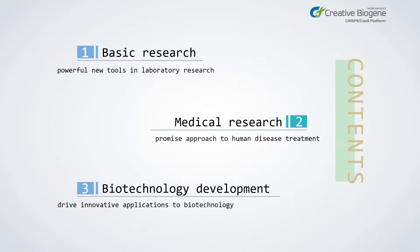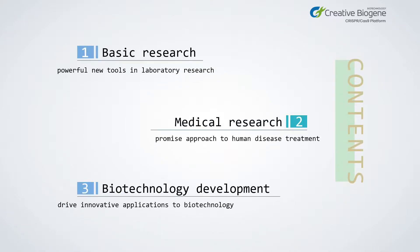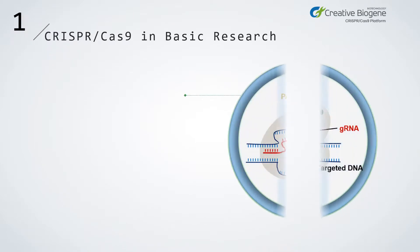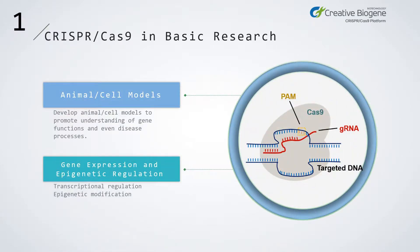The application of the CRISPR system has matured in basic research, medical research, and biotechnology development. In basic research, CRISPR-Cas9 is mainly used to construct animal models to help understand gene functions and even disease processes. In addition, the CRISPR system shows unique advantages in gene transcriptional regulation and epigenetic modification.